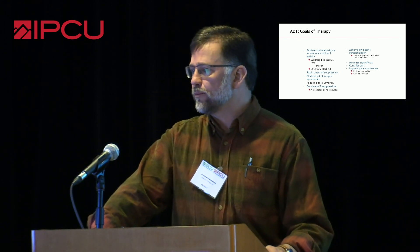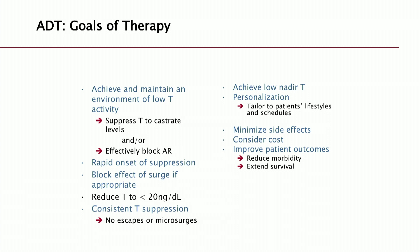We agree on most of these, though some we won't. We want to achieve and maintain an environment of low testosterone. We want to suppress the testosterone to castrate levels as low as possible. We want to effectively block the receptor, or potentially do both. We want a rapid onset of suppression and want to block a surge if we're going to use an agonist. We want to reduce testosterone to less than 20, and I'll argue as low as possible. We want consistent testosterone suppression — no escapes, no microsurges, no intermittency — and we want to achieve as low a nadir testosterone as possible.